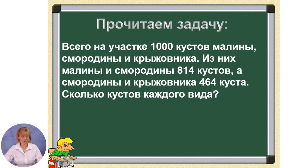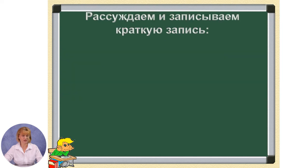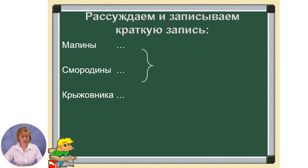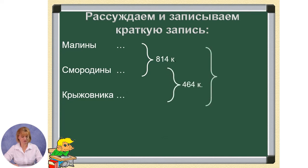Прочитаем задачу — let's read the problem. Всего на участке 1000 кустов малины, смородины и крыжовника. Из них малины и смородины — 814 кустов, а смородины и крыжовника — 464 куста. Сколько кустов каждого вида? — How many bushes of each type? Рассуждаем и записываем краткую запись: малины, смородины, крыжовника. Что известно в задаче? Известна сумма кустов малины и смородины — 814; сумма кустов смородины и крыжовника — 464; сумма всех кустов — 1000. Что неизвестно? Неизвестно количество кустов каждого вида.